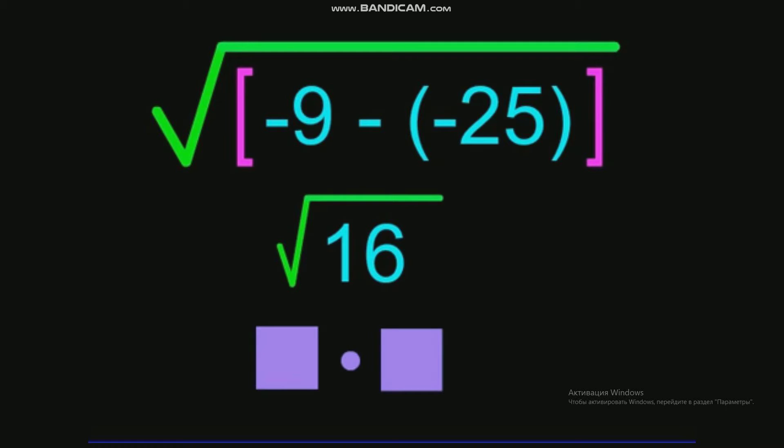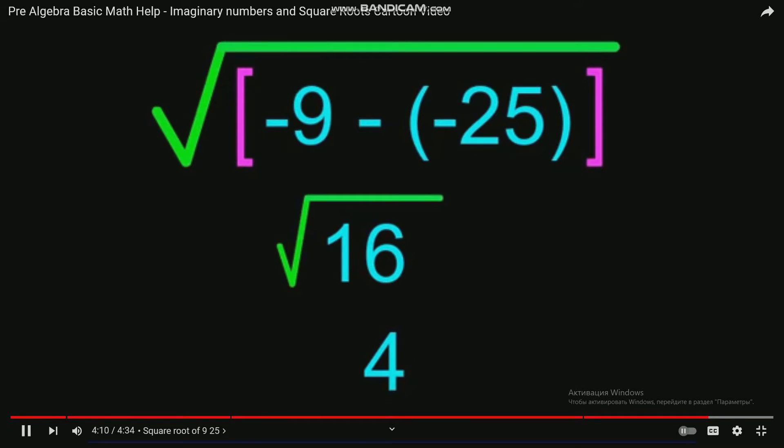What number times itself equals 16? 4 times 4 equals 16. So 4 is our answer.